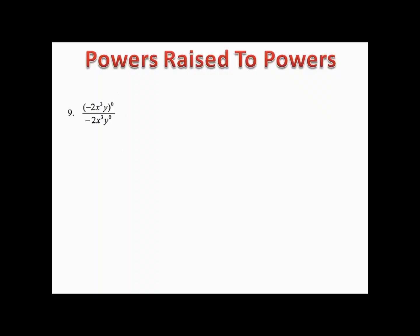Example nine: in the top we distribute the zero to everything up there, and we end up with simply 1 on the top. In the denominator we have negative 2x³, and y to the zero becomes 1, so we simply have negative 2x³ down there, giving us 1 over negative 2x³.